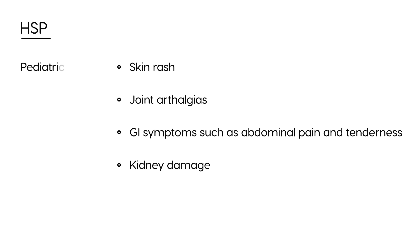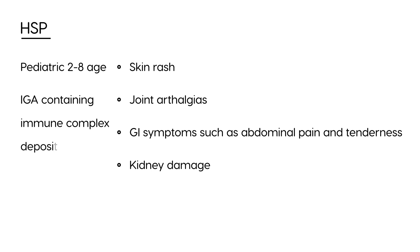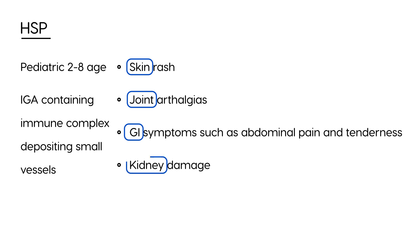HSP is a pediatric disorder, most commonly between two to eight years of age. What's happening is that there is an IgA-containing immune complex causing the problems by depositing in small vessels — in the skin, joints, GI tract, and eventually the kidney. This can be triggered most commonly by an upper respiratory infection or strep infection, and sometimes drugs or foods.